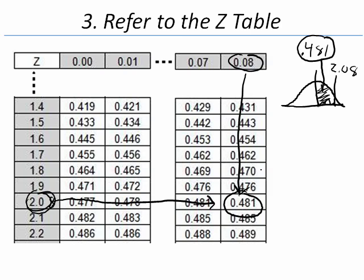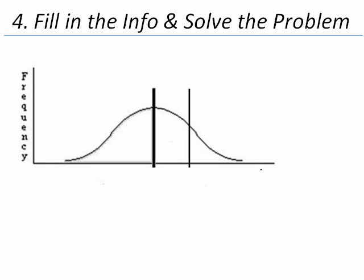Now we're ready to solve our problem. Our fourth step: we go ahead and we fill in the information and we solve the problem. We already know that the area below our mean of 70 is equal to .500. That is, half the population is below the mean. The other half is above the mean.